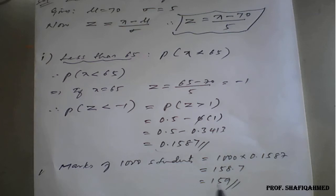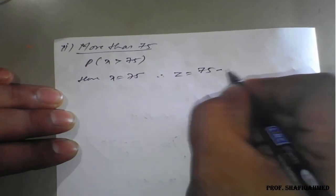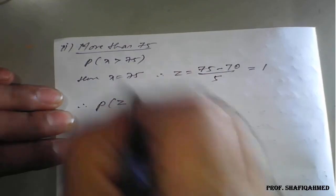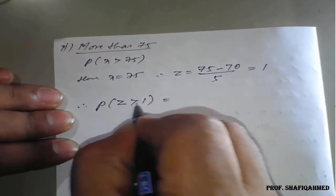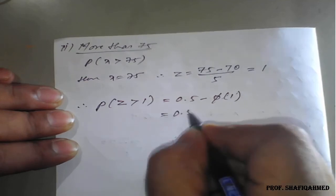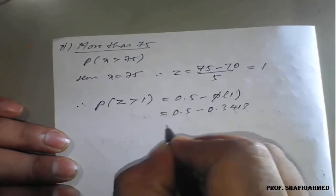Similarly, the second one: more than 75 means P(X > 75). Here x is 75, so z is nothing but (75 minus 70) divided by 5, which is 1. Therefore it becomes P(Z > 1), which is 0.5 minus φ(1), same as the previous one, giving 0.5 minus 0.3413.